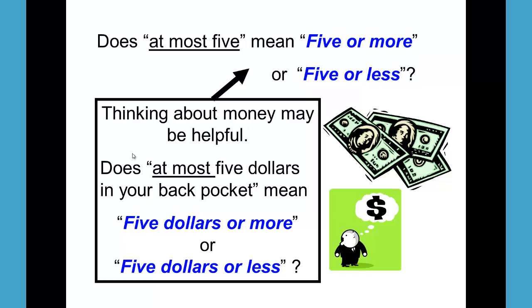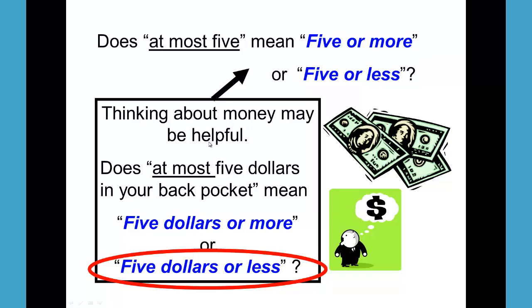If you told someone that you had at most five dollars in your pocket, that would mean you could have five dollars or you could have less. You would not tell someone you had at most five dollars in your pocket if you had more than five dollars. So 'at most five' means five or less.